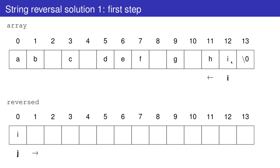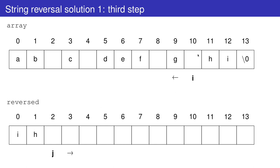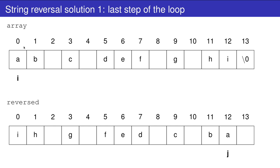The simplest approach is to move to the end of the first array, one character before the terminating one, and start copying all the characters into the new array by going backwards. On the first step, we copy the character at position 12 (i) into the new array at position 0 (j). We proceed until i reaches index 0 and j reaches index 12, copying all characters. What is missing is the terminating character, which we'll add after the loop finishes.